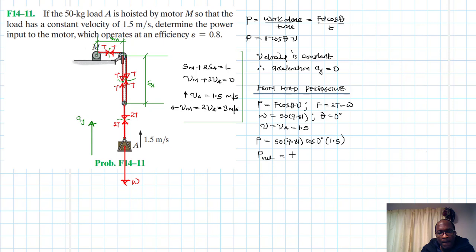Now power is equal to 50 by 9.81 cos 0 degrees by 1.5. And this will get a 735.75 watts.